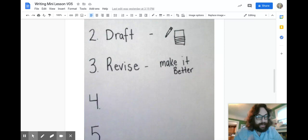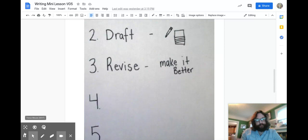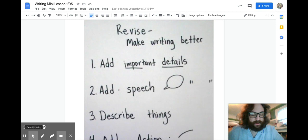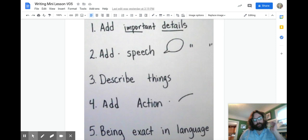And now let's take a look at the list of what we came up with yesterday of ways to make it better. So here's our list of ways to revise to make our writing better. The first we can do is we can add important details.